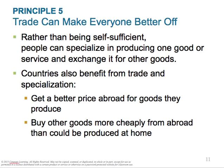Principle five is trade can make everyone better off. Rather than being self-sufficient, people can specialize in producing one good or service and exchange it for other goods. Countries also benefit from trading and specialization, getting a better price abroad for the goods they produce. They can also buy other goods more cheaply from abroad than they could produce at home. Certain individuals and nations are better at producing some things versus others — this is the specialization of labor that Adam Smith talked about in 1776.